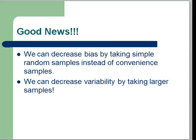The very good news in statistics is we can easily control bias and variability. We can decrease bias by taking simple random samples instead of convenient samples. We learned that in the last lesson. We can decrease variability simply by taking larger samples.